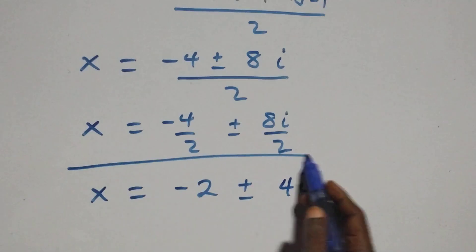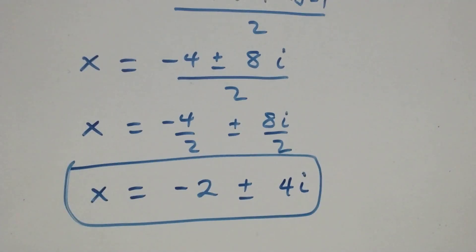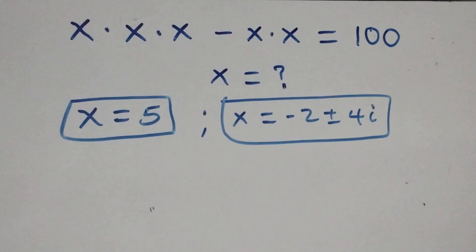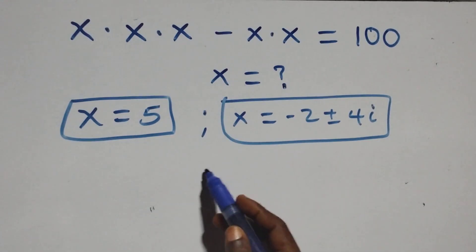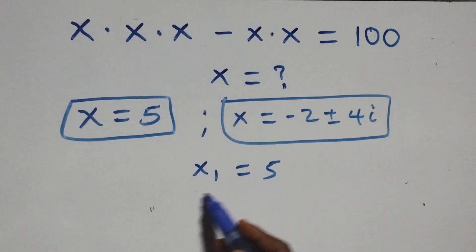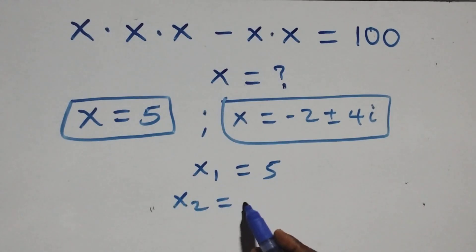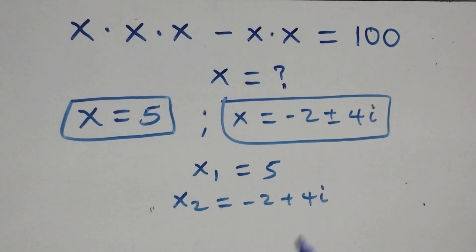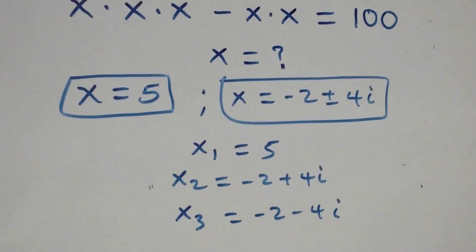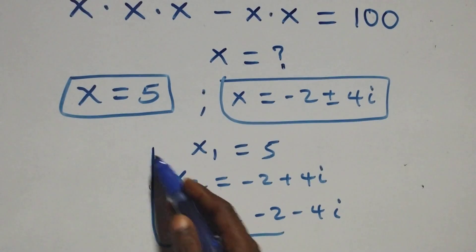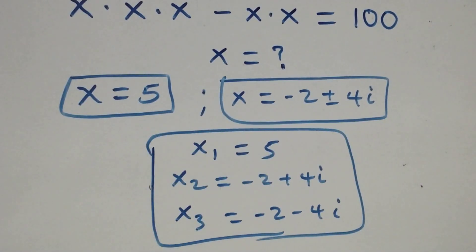We have two complex solutions. Therefore, all together we have three solutions: x₁ equals 5 (the real solution), x₂ equals minus 2 plus 4i, and x₃ equals minus 2 minus 4i — one real and two complex solutions.